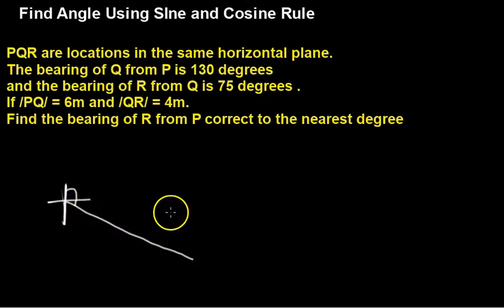Now, it says the bearing of R from Q. Let's label it first. This is P. Let's label this part Q. And the bearing of R from Q is 75 degrees. I've picked my north again. To pick my bearing, 75 degrees would be in the first quadrant. That means here is 75 degrees.